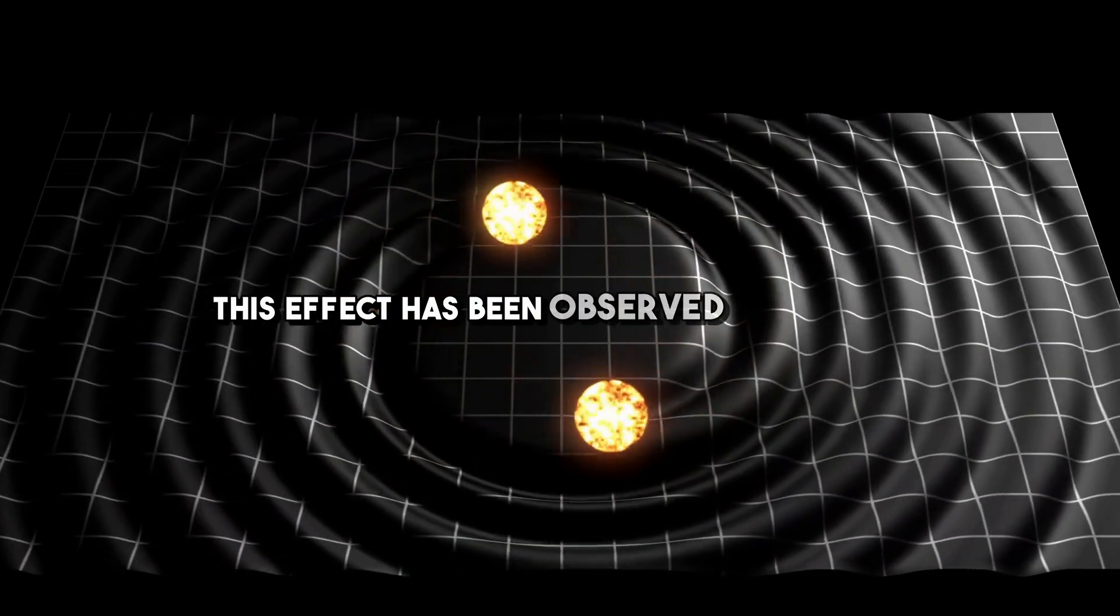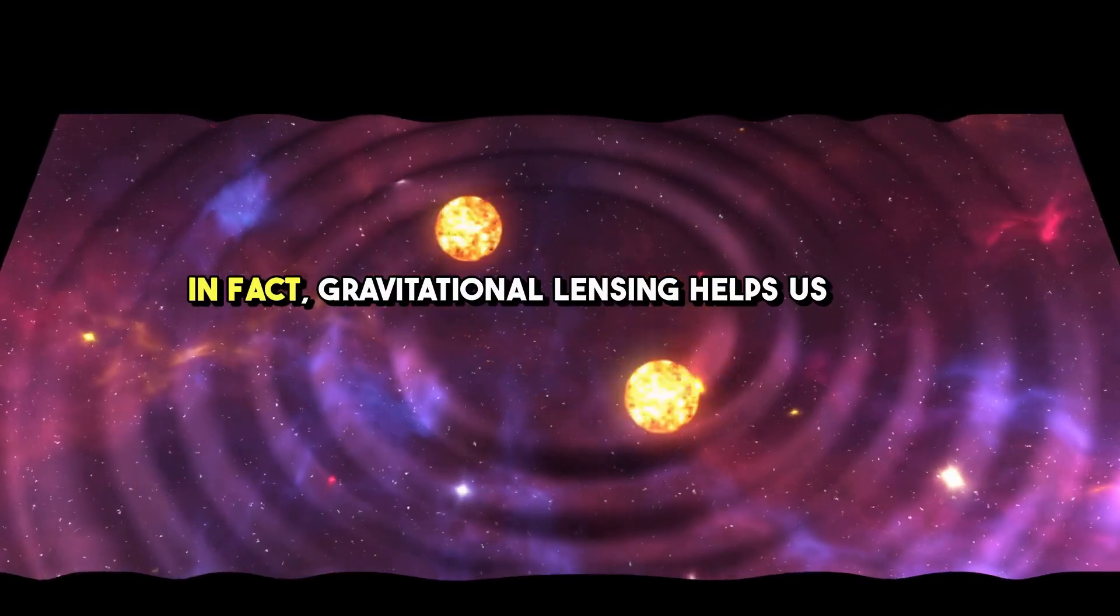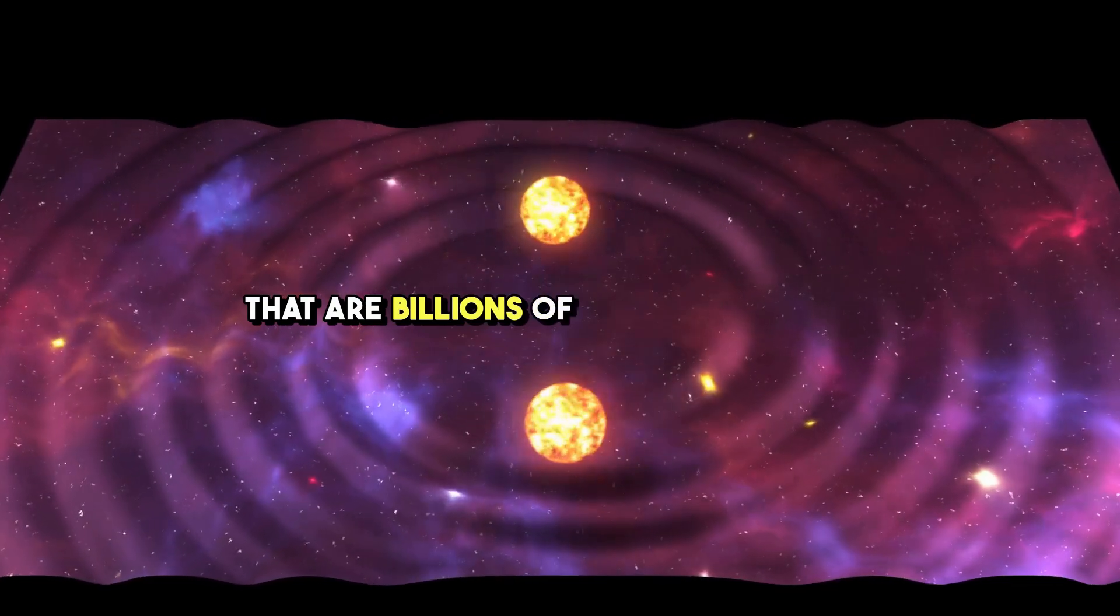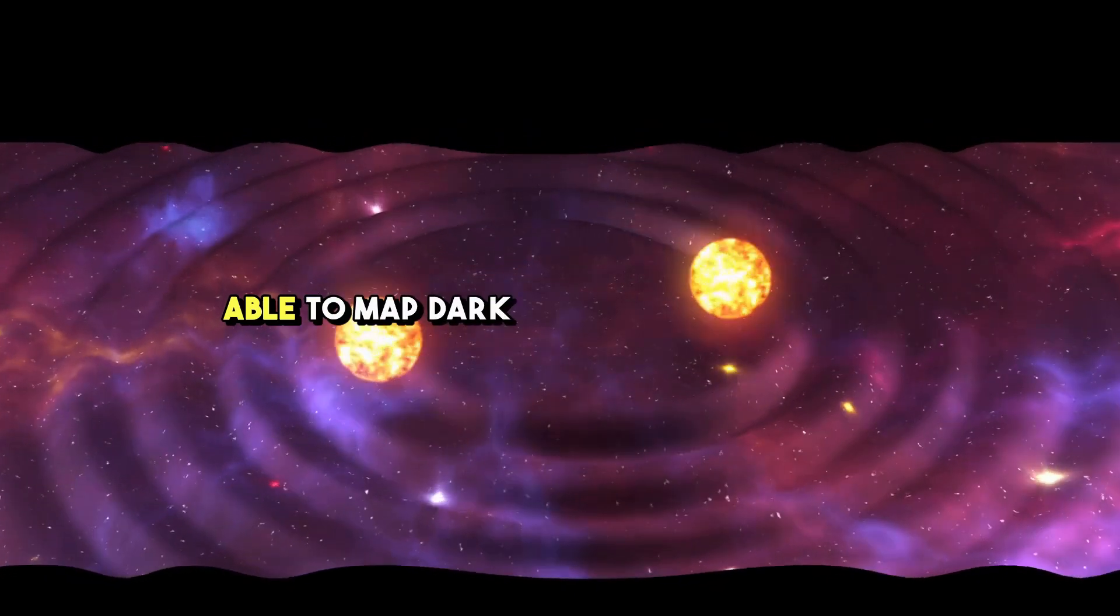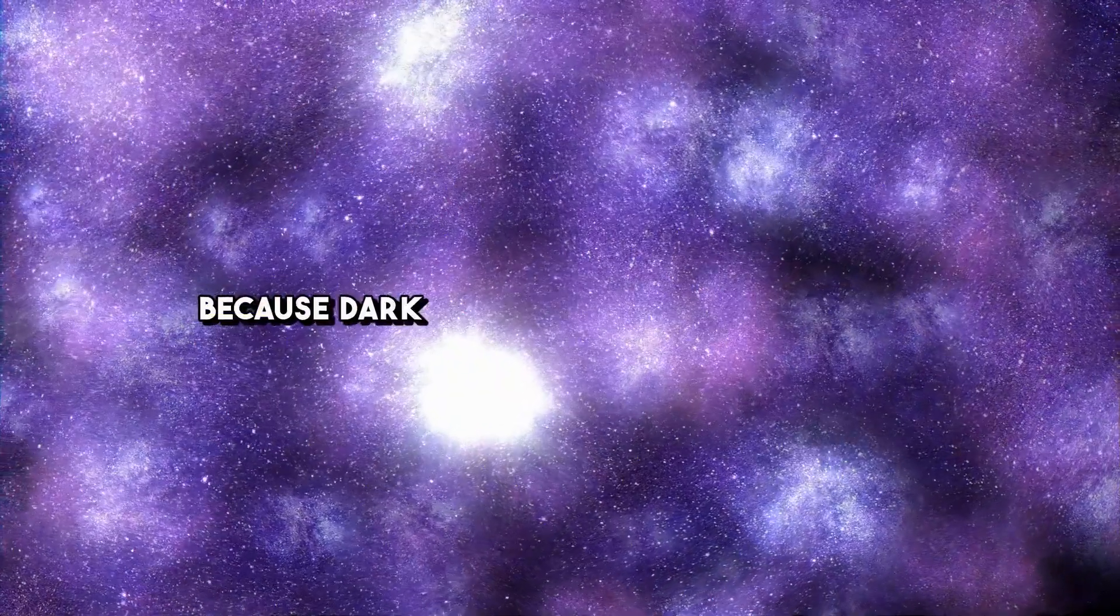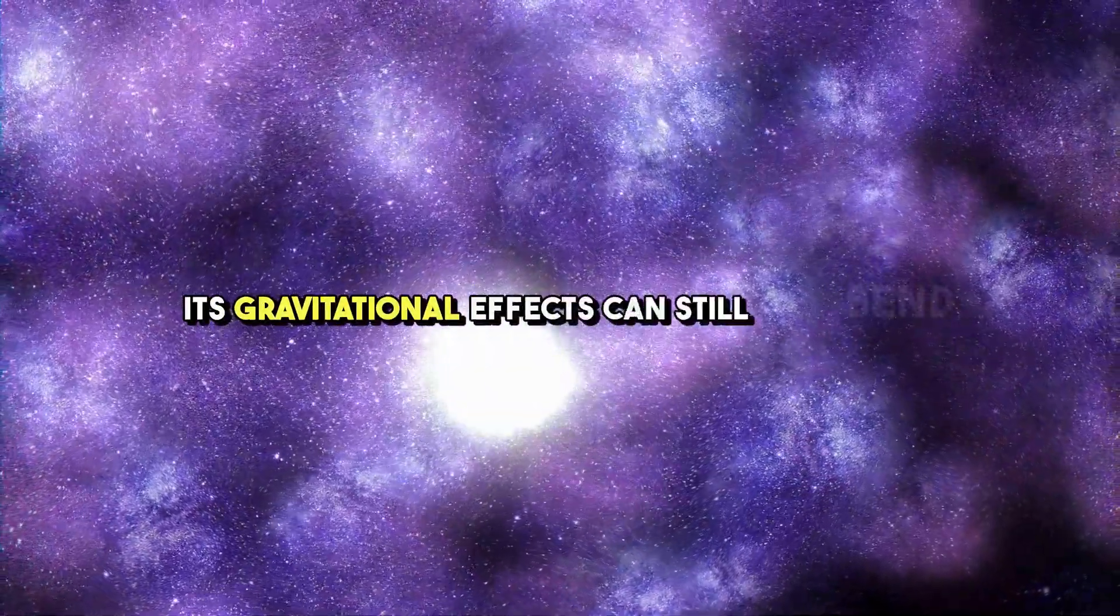This effect has been observed many times. In fact, gravitational lensing helps us study galaxies that are billions of light-years away. And it's one of the ways we've been able to map dark matter in the universe. Because dark matter doesn't emit light, but its gravitational effects can still bend light.